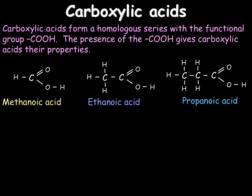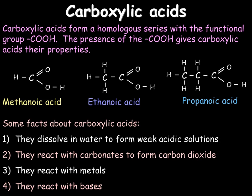Carboxylic acids have that COOH group attached as shown: we have our carbon, a double bond to the first oxygen, a single bond to the second oxygen, and then the H. Examples include methanoic acid, ethanoic acid which is vinegar, and propanoic acid. Carboxylic acids dissolve in water to form weak acidic solutions, and then act very much like traditional acids — they will react with carbonates to form carbon dioxide, for example calcium carbonate, they react with metals, and they will react with bases, carrying out a neutralisation reaction, as we looked at previously in the titrations tutorial.